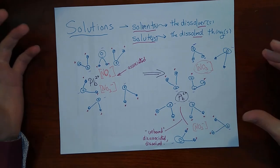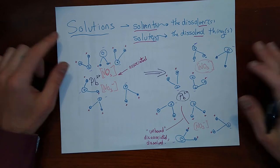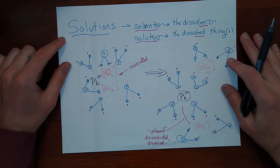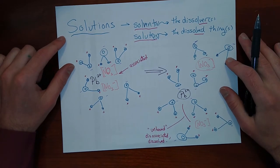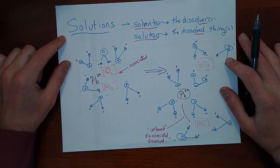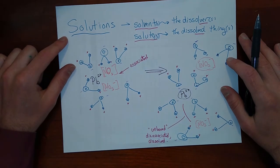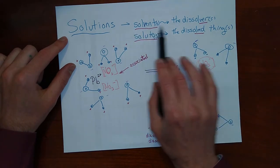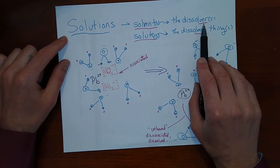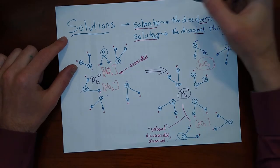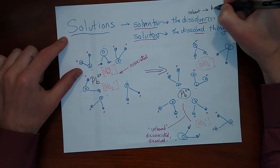So what is a solution? A solution is a mixture of a solvent and some solutes. These are the technical terms. Solvents are usually some kind of liquid — although they don't have to be — gases and other forms of matter can also act as solvents. The solvent is basically the dissolver: it's the thing that dissolves the other compounds that are put into it.